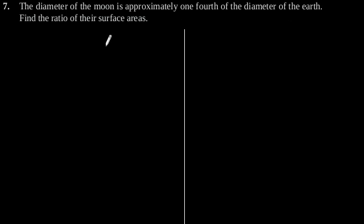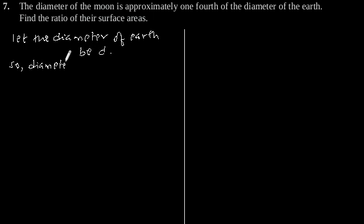So let the diameter of earth be d. So diameter of moon will be d by four, since the diameter of earth is d.